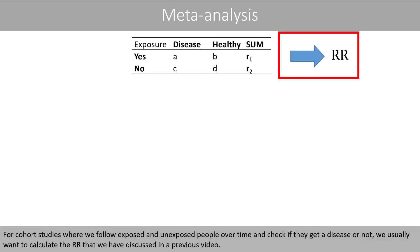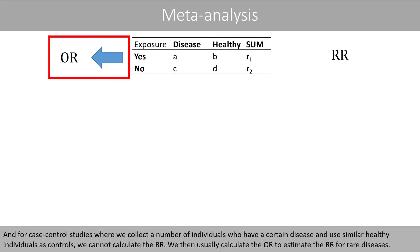For cohort studies, where we follow exposed and unexposed people over time and check if they get the disease or not, we usually want to calculate the relative risk. And for case-controlled studies, where we collect a number of individuals who have a certain disease and use similar healthy individuals as controls, we cannot calculate the relative risk. We then usually calculate the odds ratio to estimate the relative risk for rare diseases.